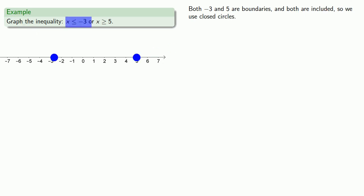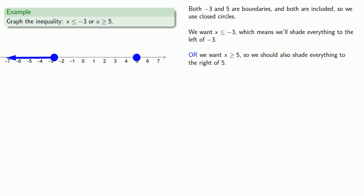We want x less than or equal to negative 3, which means we'll shade everything to the left of negative 3. Or, we want x greater than or equal to 5, so we should also shade everything to the right of 5.